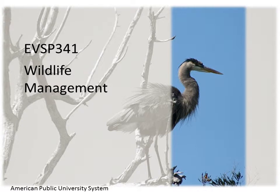Three effects can influence the population outcome underlain by those individual probabilities: individual variation, short-term environmental variation, and environmental change.